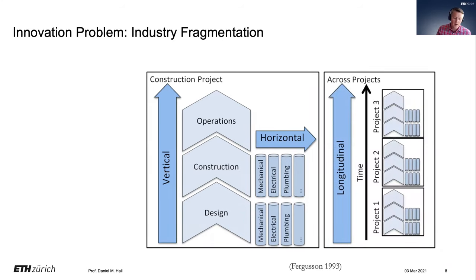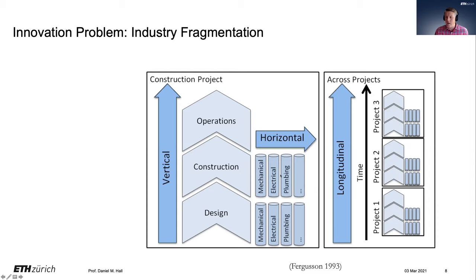Finally, we have longitudinal fragmentation. In traditional construction, we come together on a project-by-project basis and remake the supply chain every project — we never have continuity between projects. Even if at the end of project one we learn all the ways to cross-subsidize and develop new products, we never really work together with the same partners again. This was called a 'learning disability' that slows down innovation diffusion.